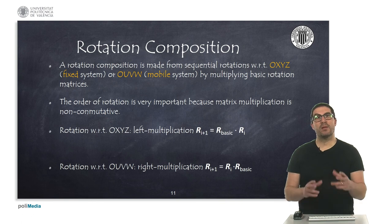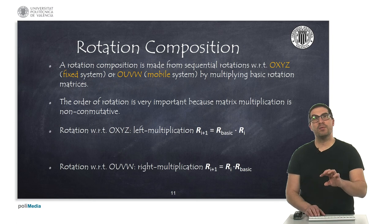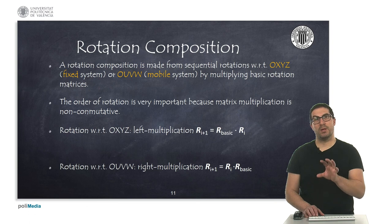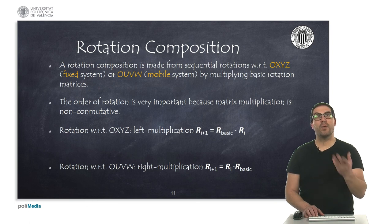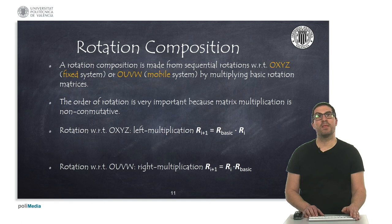The idea is that our reference frame will have a specific orientation. If we perform, for instance, a rotation around the x-axis, then we have to pre-multiply an x-axis rotation to the current orientation, and we will get, in the end, a new rotation matrix. We can do the same with respect to the mobile frame, and we will see that in different examples.